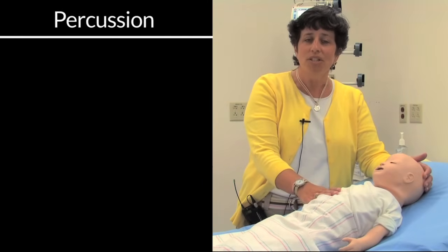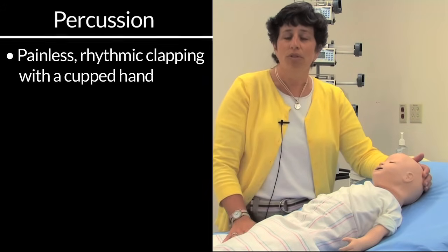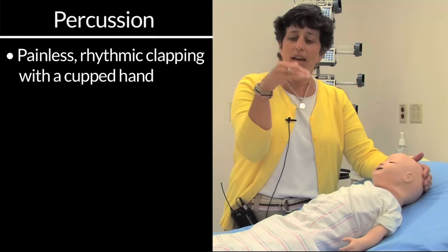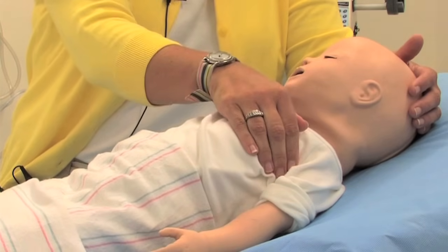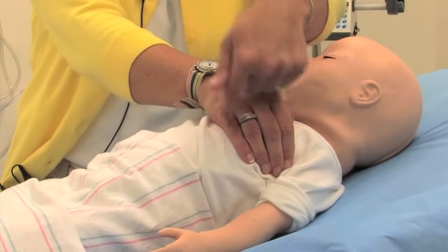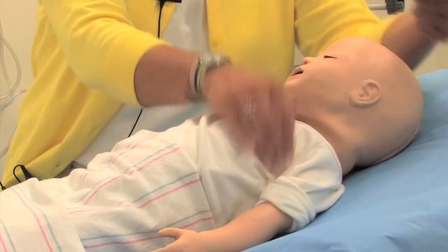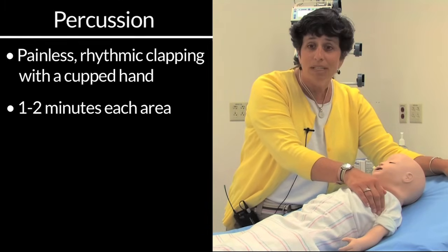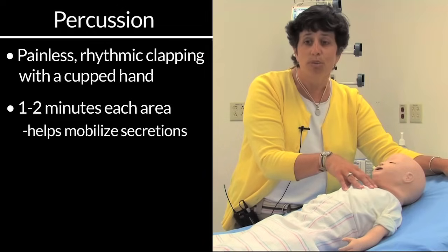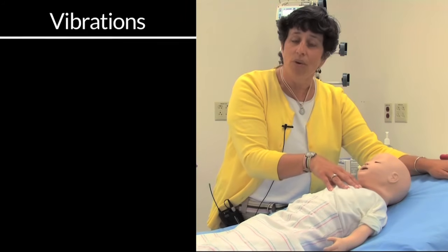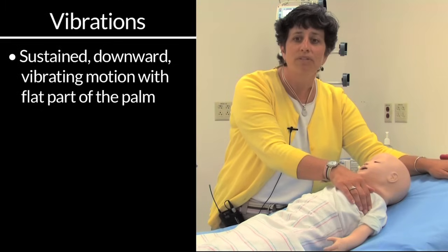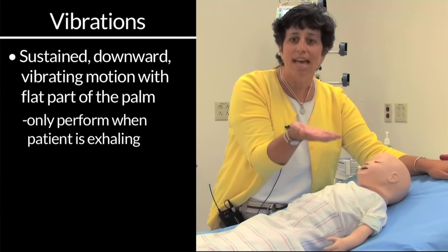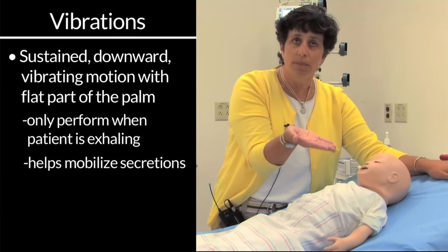Percussion is a painless rhythmic clapping with a cupped hand over an area of the chest. You want to make almost a C shape with your hand and keep a loose wrist, pressing the C against the chest so that there is a pocket of air creating a nice seal. You would perform percussion for one to two minutes in each area to help mobilize secretions. Following that, you do vibration, which is a sustained downward vibrating motion with the flat part of the palm, performed only when the patient is exhaling. It also helps with mobilization of secretions.